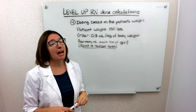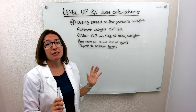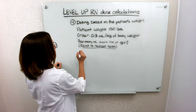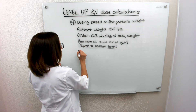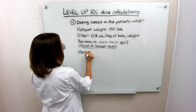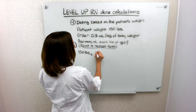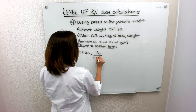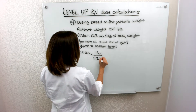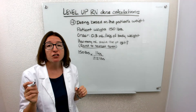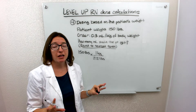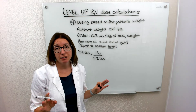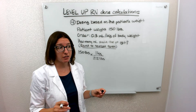You can already see we're going to have to convert pounds to kilograms, so let's go ahead and do that first. 150 pounds, and 1 kilogram equals 2.2 pounds. This is a conversion factor that you absolutely have to know, and you're going to be using it repeatedly when you're doing dosing calculations.